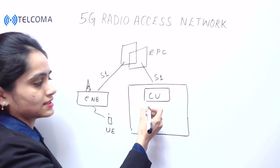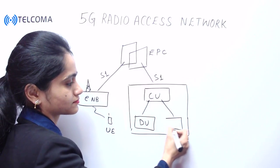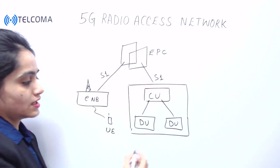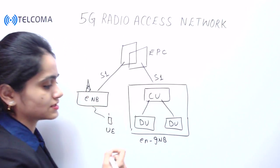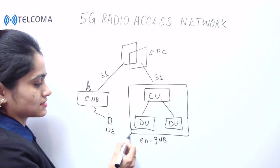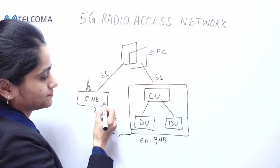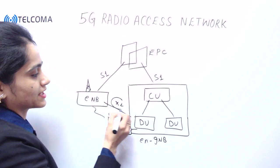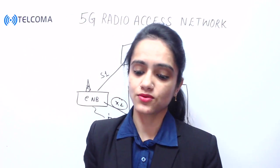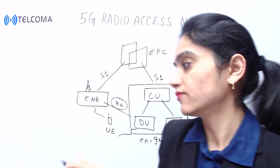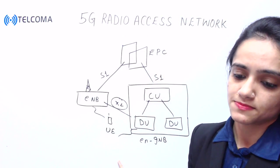The CU is then connected to the DUs (distributed units), and this is further connected to the user equipment. In non-standalone operation, we can connect with the help of the X2 interface. In Release 15 specifications, X2 can be used to connect the eNodeB with the en-gNB.